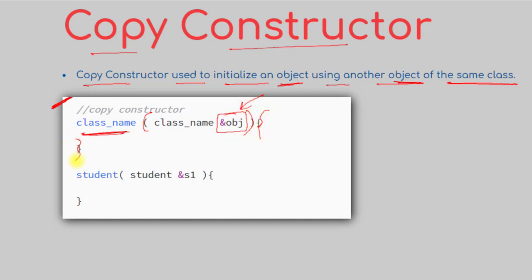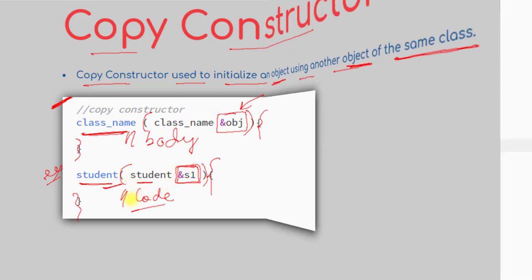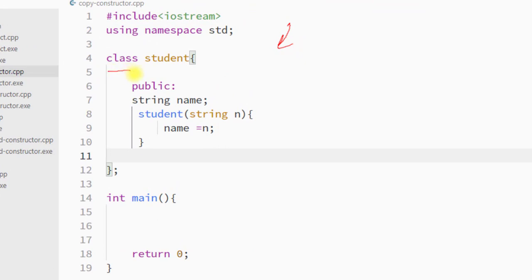Inside the curly braces we write the body of the copy constructor. For example, we have one constructor called 'student' and the constructor takes one student-type object reference. Inside the curly braces we write the code to copy the members of the old object to the new object. In this example program we have one class called 'student' and the class has the data member 'name'.